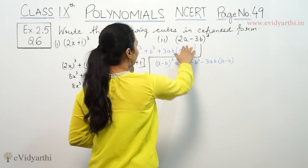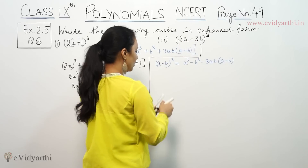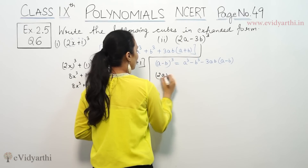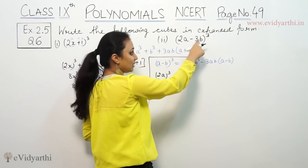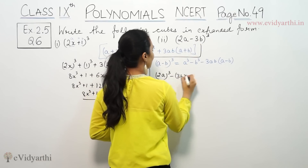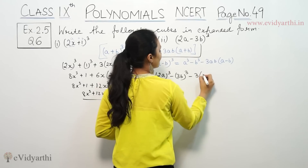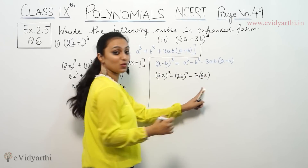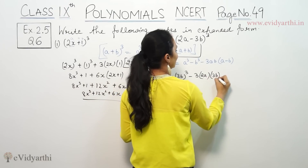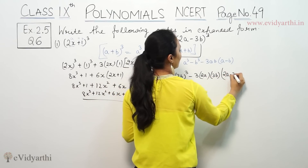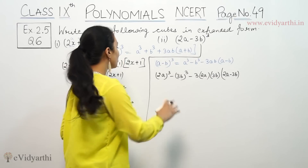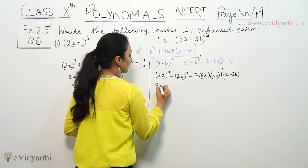Here we have (2a minus 3b) whole cube. Using (a minus b) whole cube identity, here a is 2a and b is 3b. So we substitute into the identity for (2a minus 3b) whole cube.